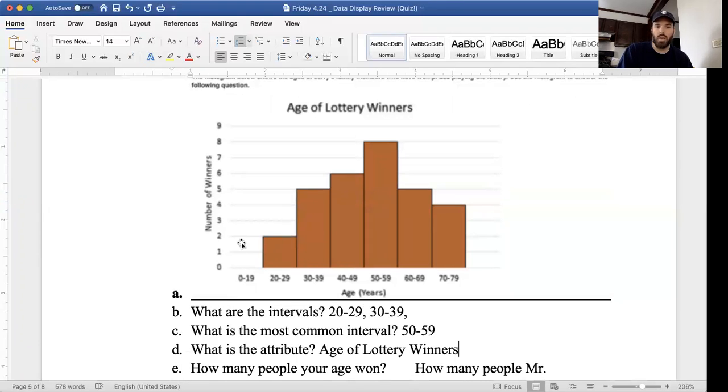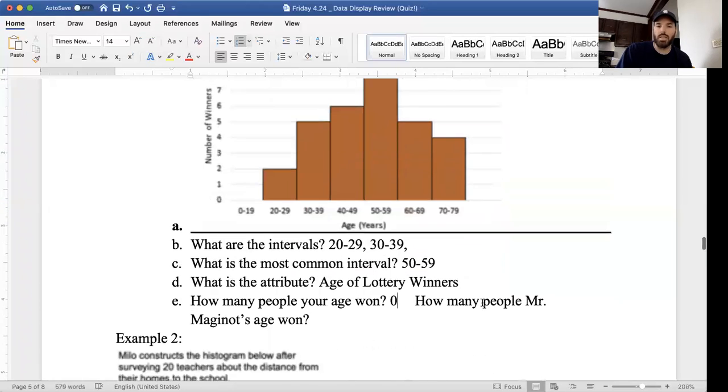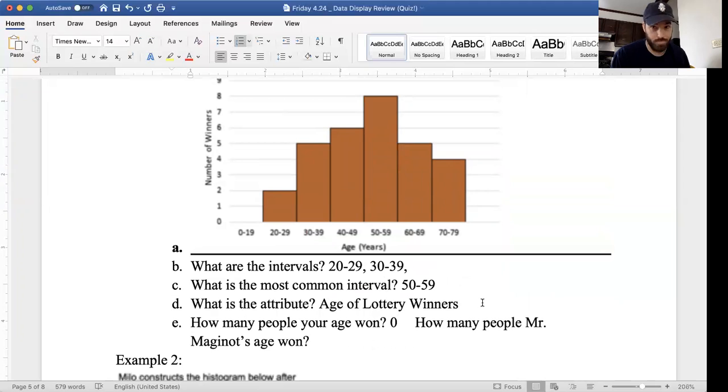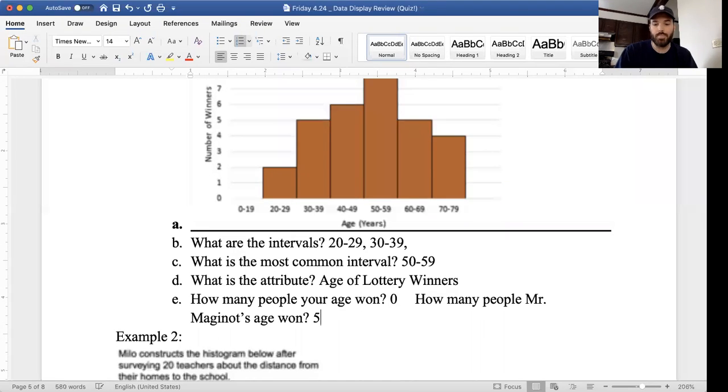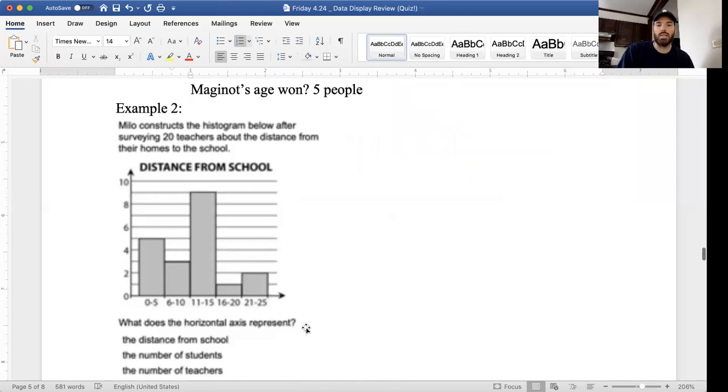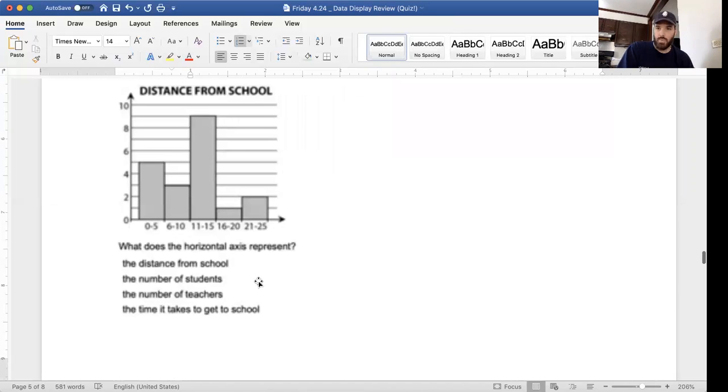How many people your age won? There's no one in the category of 0 to 19. You all are between 0 and 19 years old, so zero. How many people Mr. Maganot's age won? Hmm, depends how old I am. Don't be making jokes right now, Mia, about how old I am. I am in the 30 to 39 range. Thank you very much, which means that 5 people my age won. And last example, what does the horizontal axis represent? So these are different intervals. This is talking about our distance from school. So this would be 5 people went 0 to 5 miles. 3 people went 6 to 10 miles. So these are miles and these are people. So when it's asking for the horizontal, remember the horizontal is the one that's on the bottom. So these are the amount of miles, the distance from school.